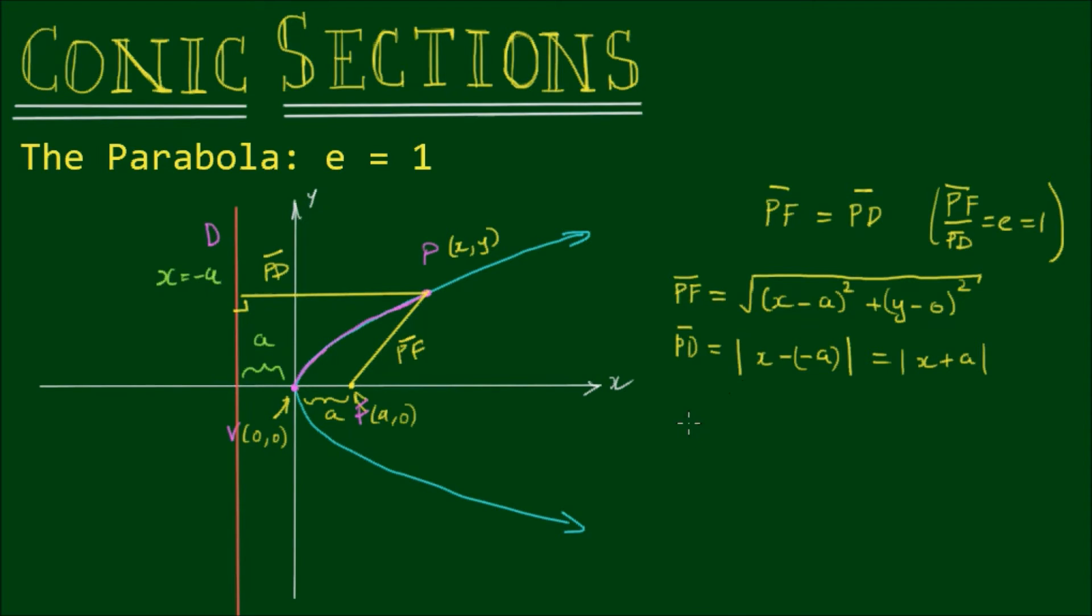So equating these two together, we have the square root of (x - a)² + y² is equal to |x + a|.